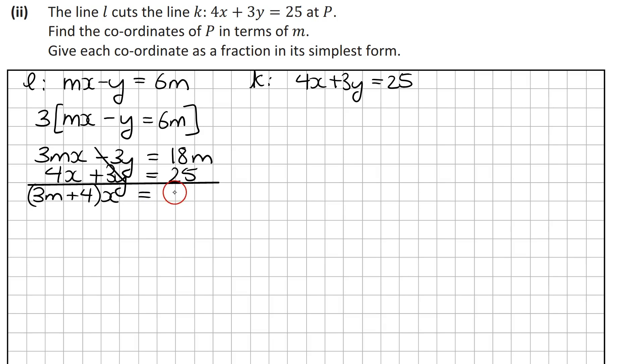So x is equal to, and we're adding 18m to 25, so then x is equal to 18m plus 25 divided by 3m plus 4.